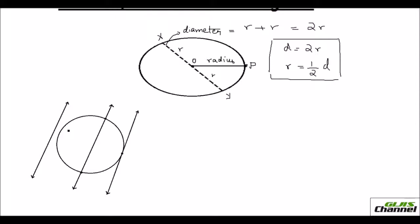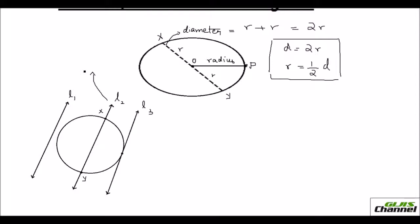When you draw a line on a circle or near the circle, there are only three options. One is that it may not touch the circle at all — so L1 is an independent line standing outside the circle. Another option is L2, where the line cuts the circle at two points, say X and Y. When a line touches the circle at two points, you call it a secant.